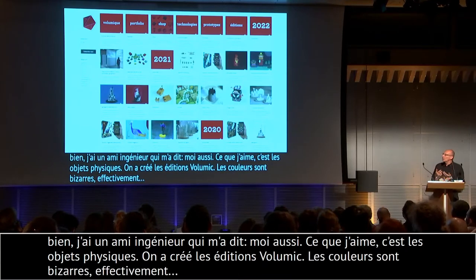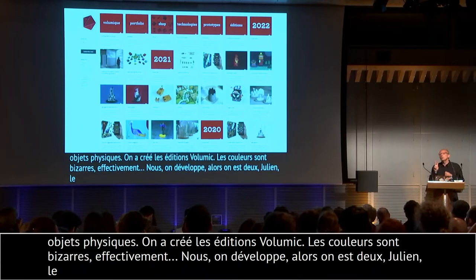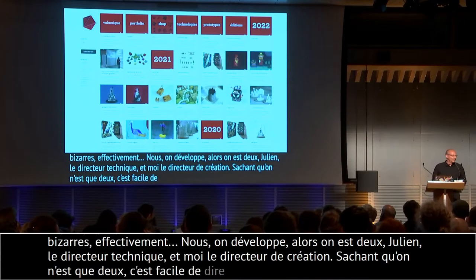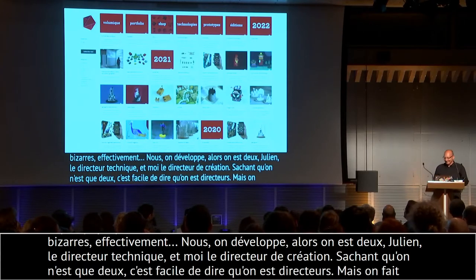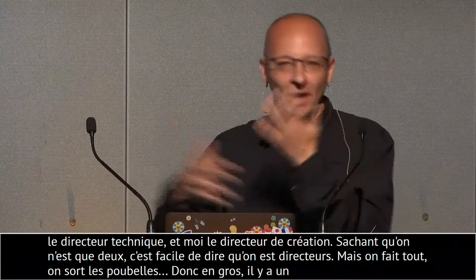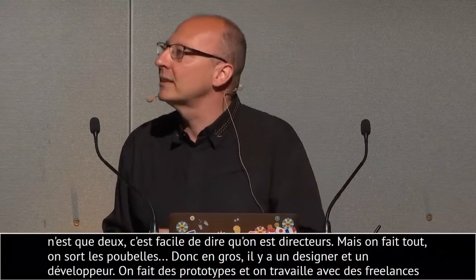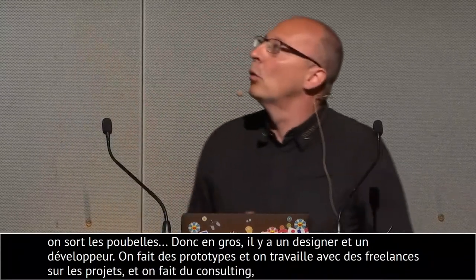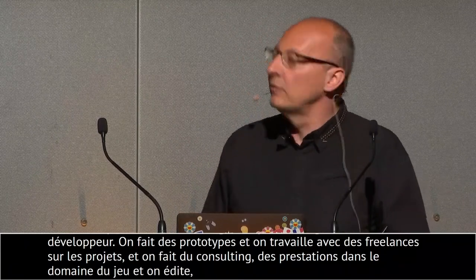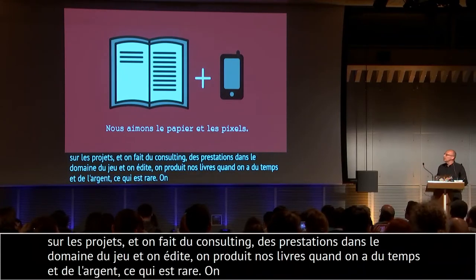On développe — quand je dis « nous », on est deux : il y a Julien Oignon, le directeur technique, et moi, le directeur de création. C'est-à-dire que c'est moi qui sort les poubelles. En gros, un designer et un développeur. On fait plein de prototypes, on travaille avec plein de freelances sur les projets, aussi bien en consulting qu'en prestations dans le domaine du jeu. On développe et on édite nos livres et jeux quand on a de l'argent et du temps, ce qui est rare. On adore le papier et le pixel, et ça fait maintenant 13-14 ans qu'on travaille sur les deux.